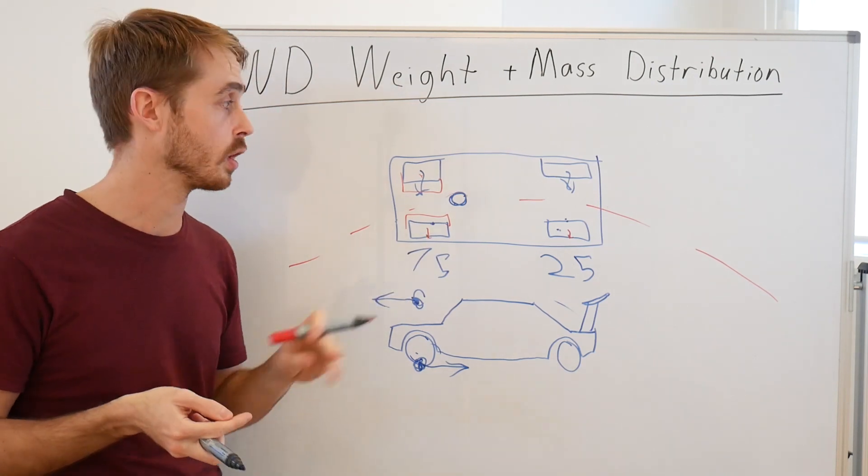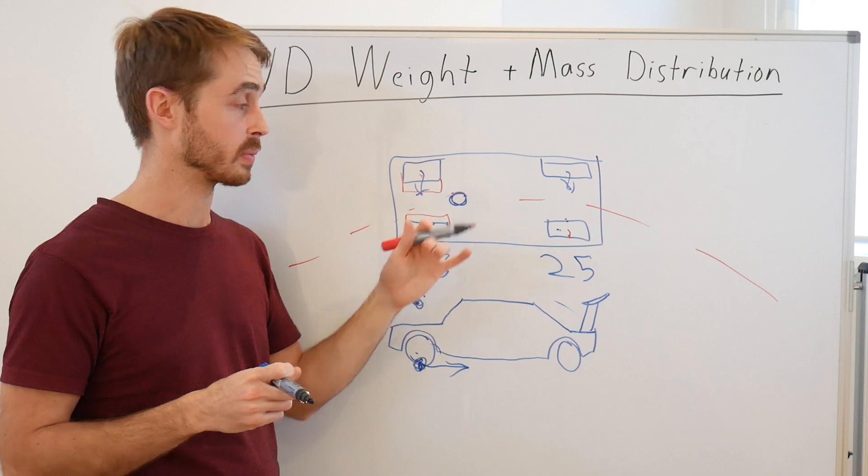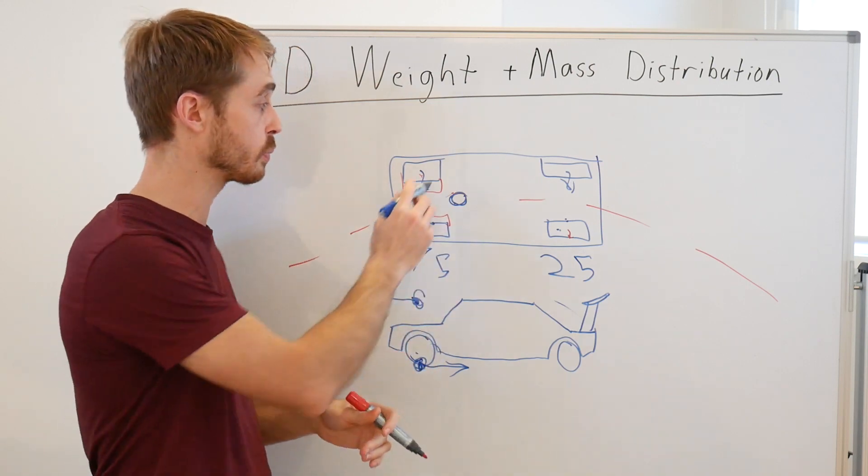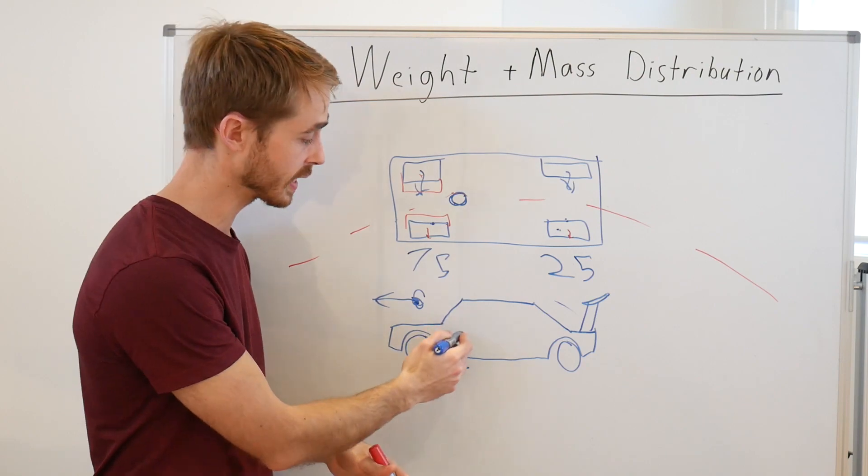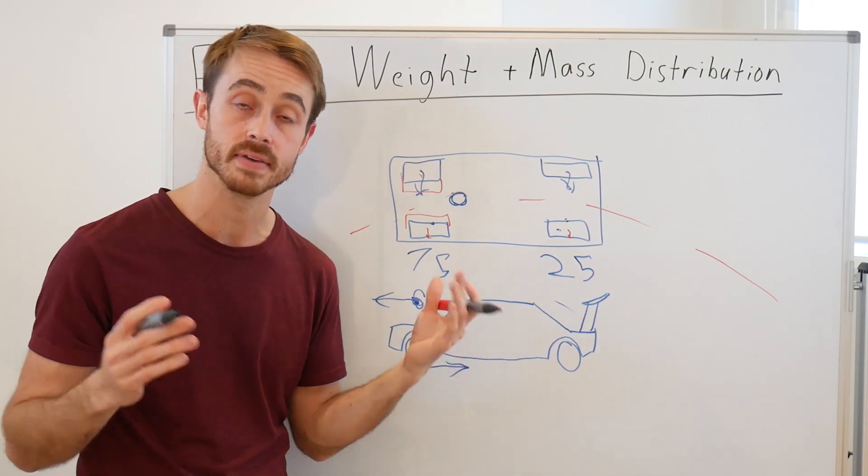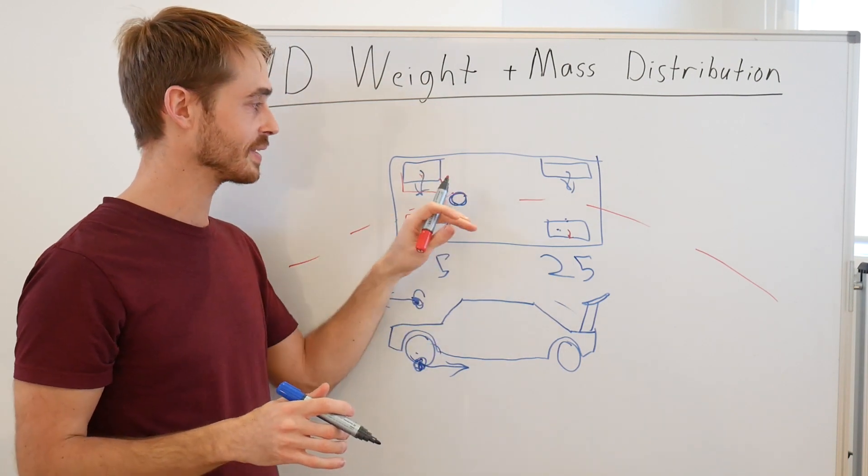The final disadvantage of running a really forward center of gravity for your front-wheel drive car is that under braking you end up with very significant weight transfer to the front. Now obviously you can negate this by having a center of gravity as low as possible. Lower center of gravity stops weight transfer.